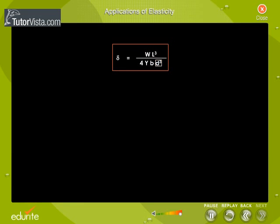...the bar sags at the midpoint by an amount δ given by δ = WL³/(4YBD³), where Y is Young's modulus of the material of the bar.